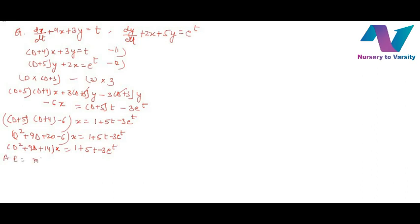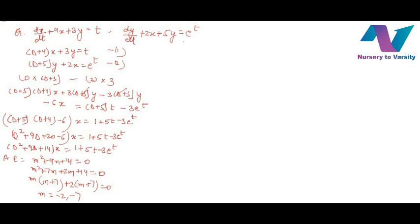The auxiliary equation is m² + 9m + 14 equals 0, which factors as (m + 7)(m + 2) equals 0, giving m equals minus 2 and minus 7. Therefore CF equals C1·e^(minus 2t) plus C2·e^(minus 7t).